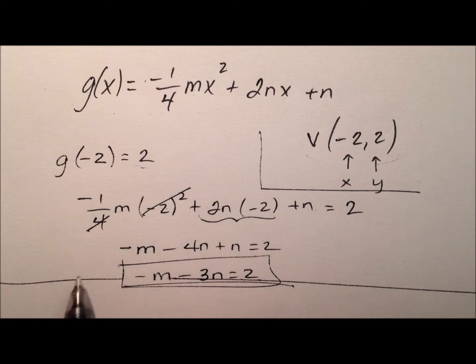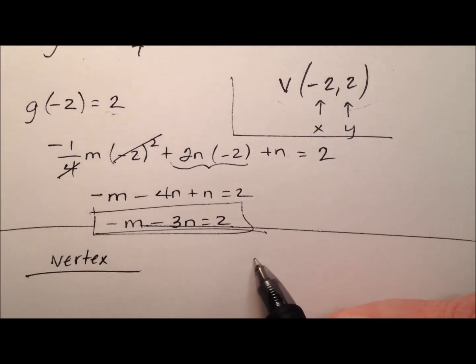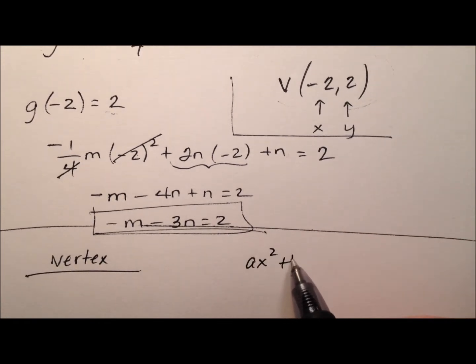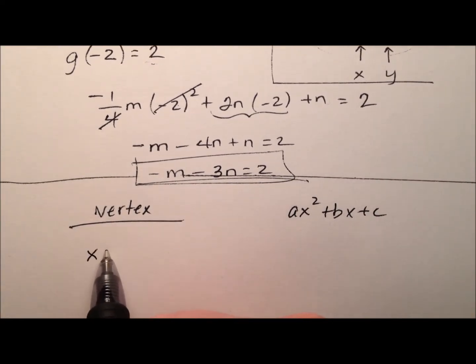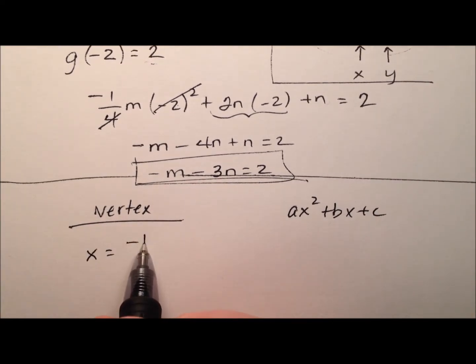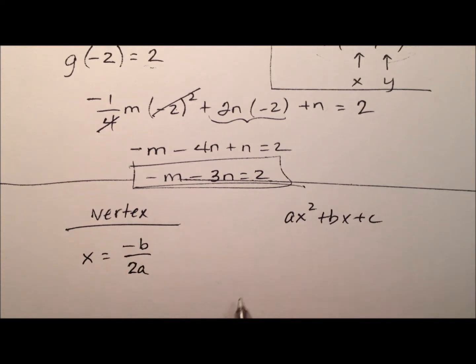Well, I know that when we're dealing with the vertex of a quadratic function in standard form. Remember, standard form will be ax squared plus bx plus c. I know the x coordinate of the vertex can be written as the opposite of b over 2a.